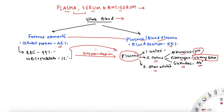So this is what whole blood looks like. Plasma is the fluid portion of the blood which contains certain proteins. We are going to especially focus on fibrinogen, because this is where the difference comes between plasma and serum. Fibrinogen is an important clotting factor for blood clotting.